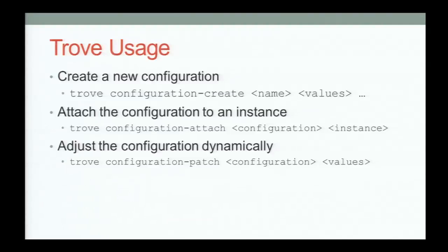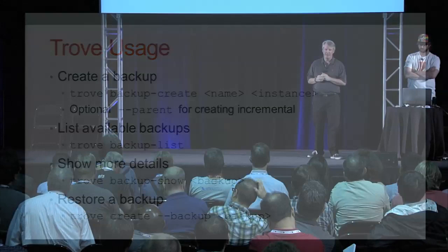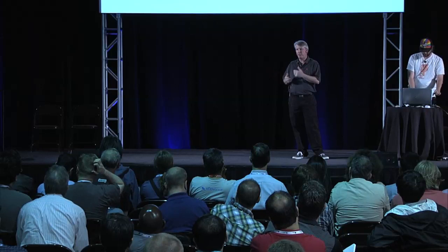What's very interesting about configuration groups is that if you have 100 instances and attach the same configuration group to all of them, you can then patch that group and push a configuration value change to all 100 instances simultaneously. For backups: trove backup-create with reference to the instance backs it up to Swift. Currently backups are point-in-time manual, though scheduled backups are being discussed. You can also do incremental backup using the parent switch. For restore, you create a new Trove instance and refer to a backup — it brings that instance up with the backup data already loaded.